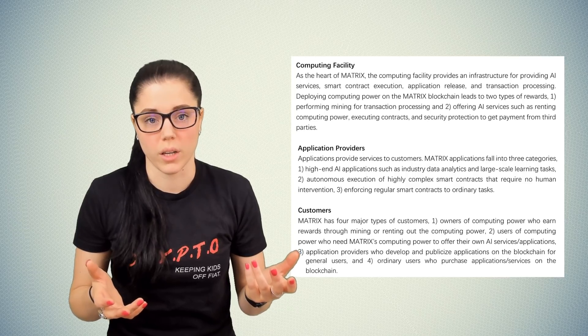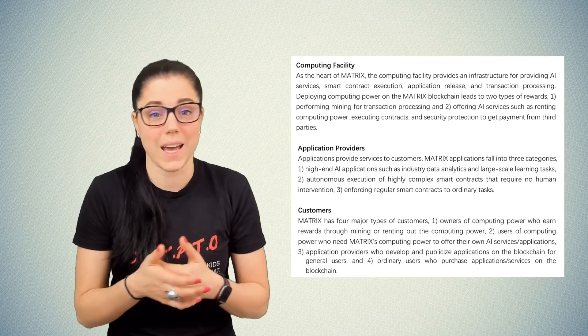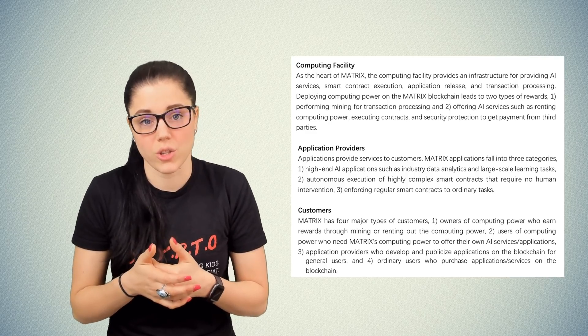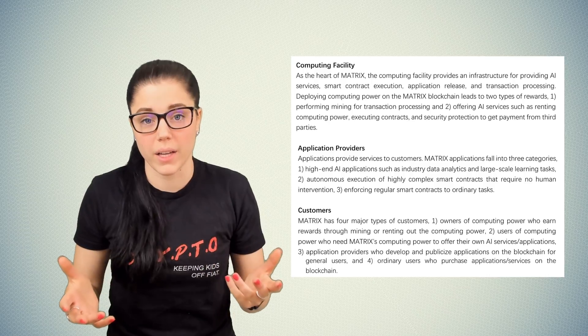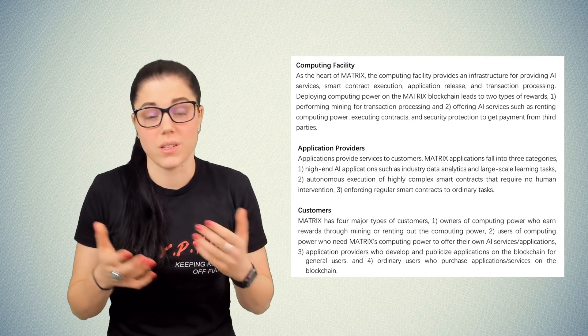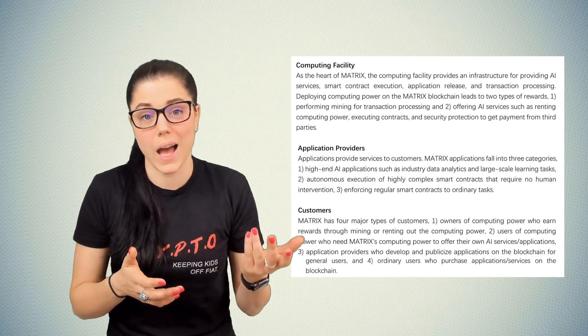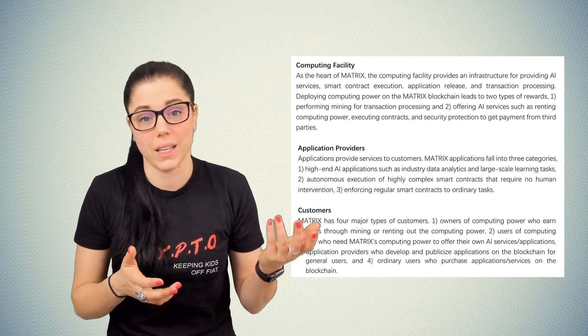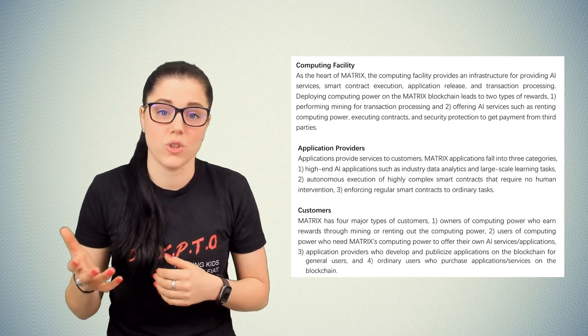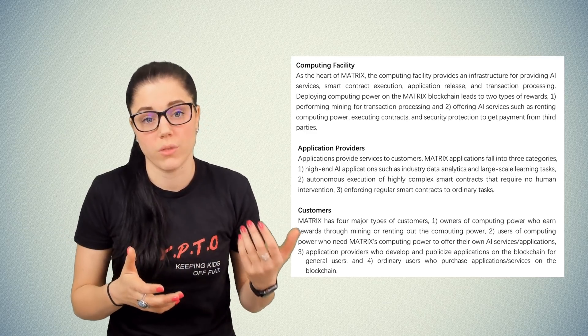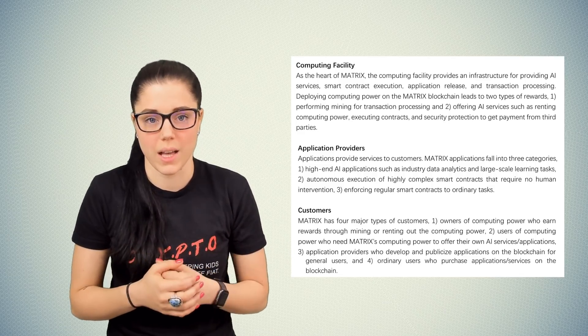There are three major groups of users that Matrix believes that their platform will target. The computing facility allows for the infrastructure of providing AI services, smart contract execution, application releases, and transaction processing. Application providers: these are the Matrix services to customers. Matrix applications fall under three categories: the high-end AI applications as an industry data analytics and large-scale learning tasks, number two is autonomous execution of highly complex smart contracts that require human intervention, and number three is enforcing regular smart contracts to ordinary tasks.